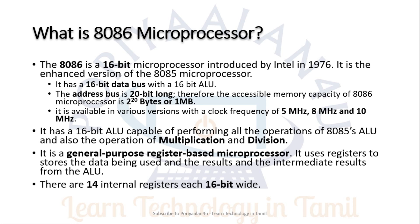Whereas for the address, the 8086 can process up to 20 bits. In 8085, the address is 16 bits, so the maximum addressable range in 8085 is 64 KB. But in 8086, the addressable range is 1 MB. Also, the clock frequency in 8086 comes in different options: 5 MHz, 8 MHz, and 10 MHz.